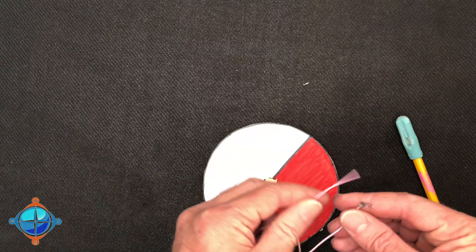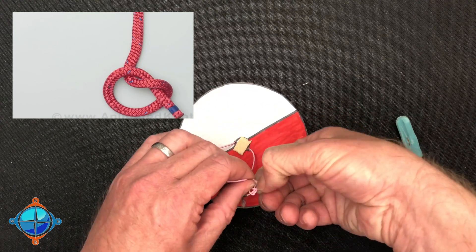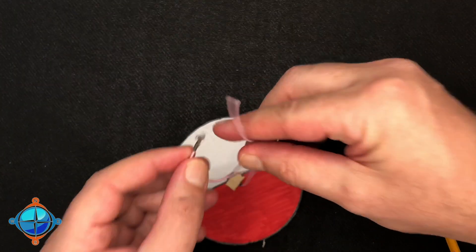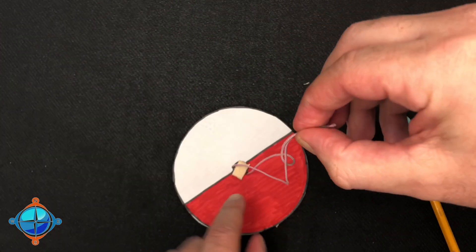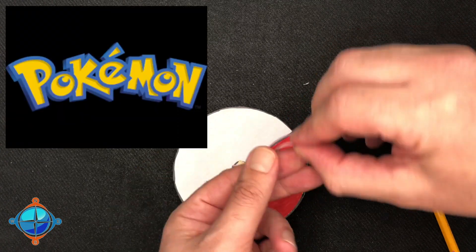Once both sides are through, tie a knot in the end of your string. If you need help, ask an adult. What happened? Did you make a pokeball? I did! That is amazing! Why did I not do that?